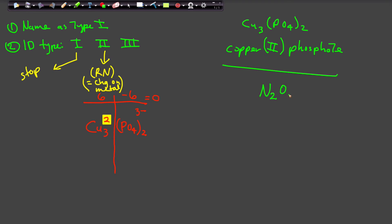And let's say it's something like this: N2O5. First thing you do is name it as a Type 1. Nitrogen oxide. Yes, a Type 1. That's a nitrogen, that's an oxide.